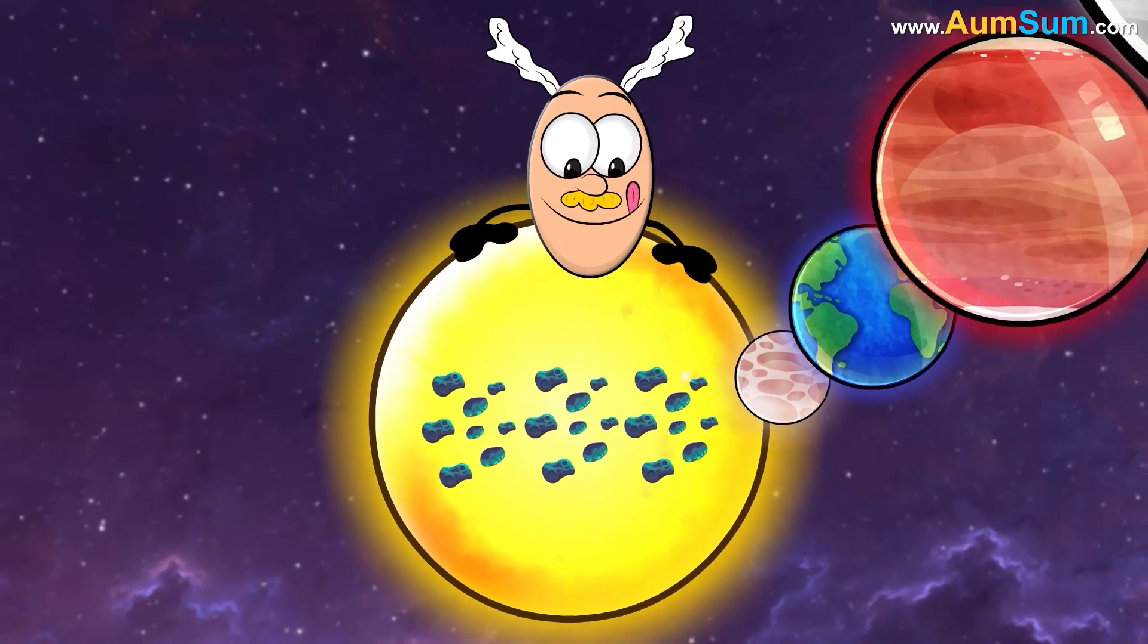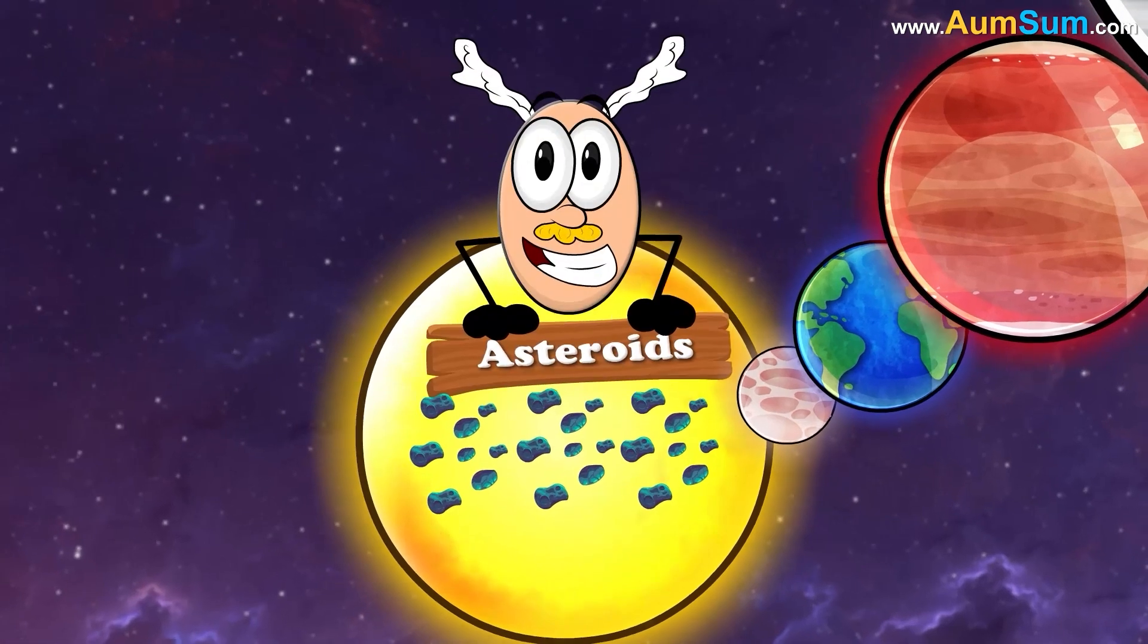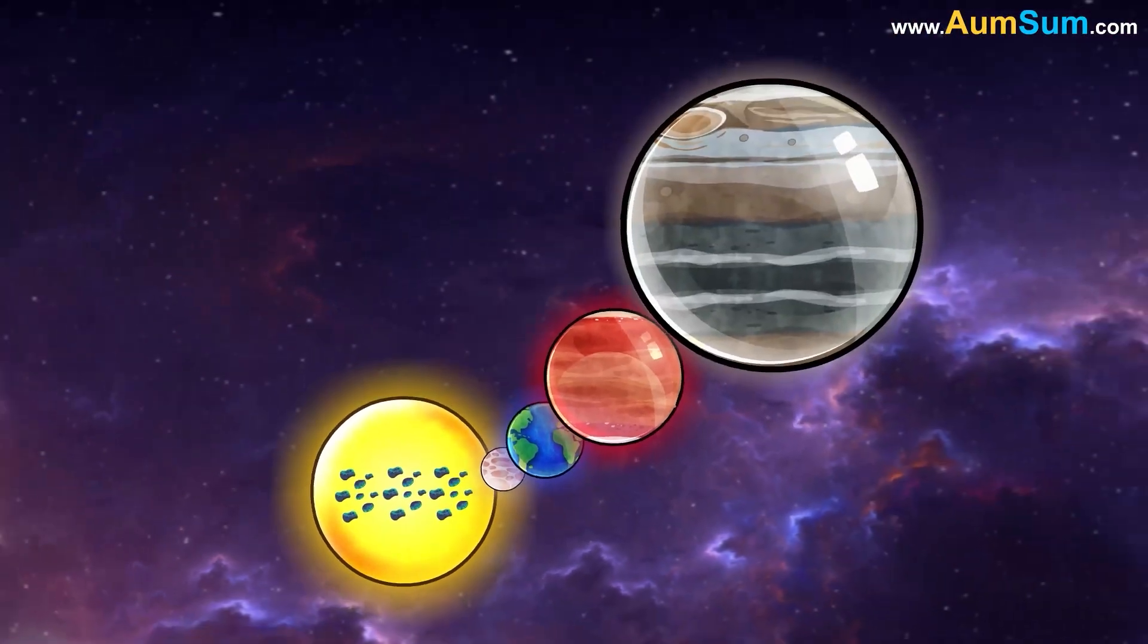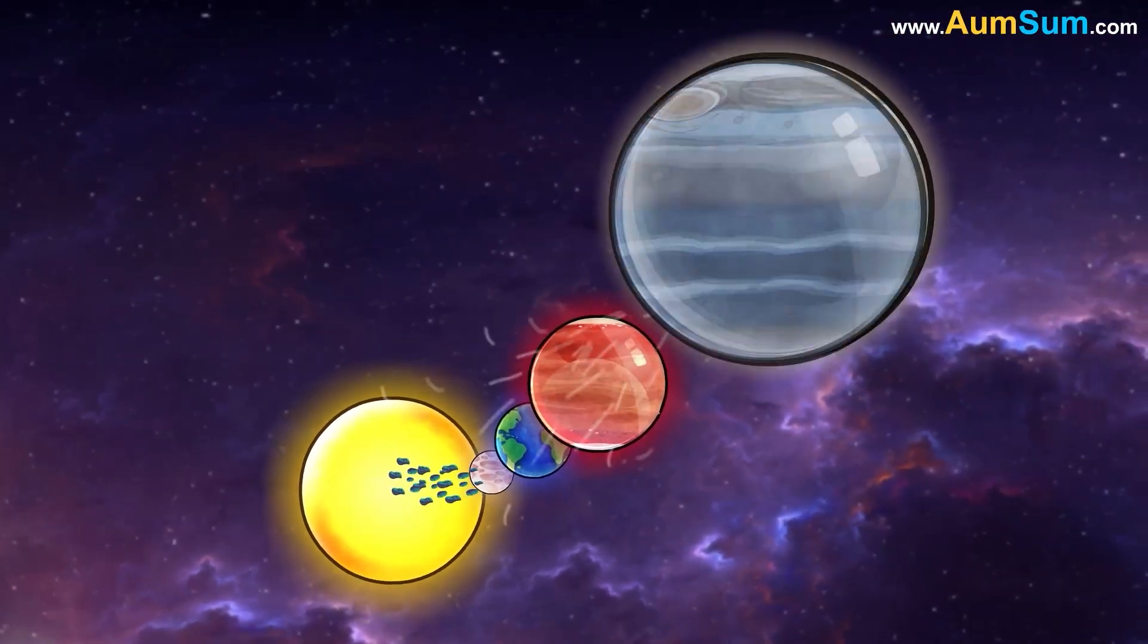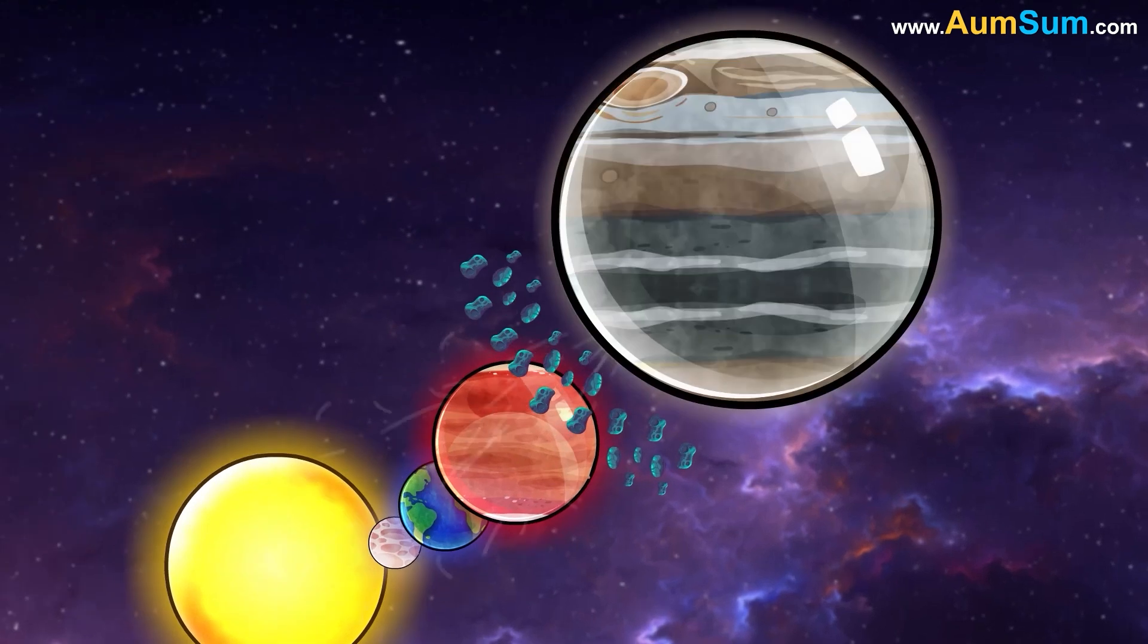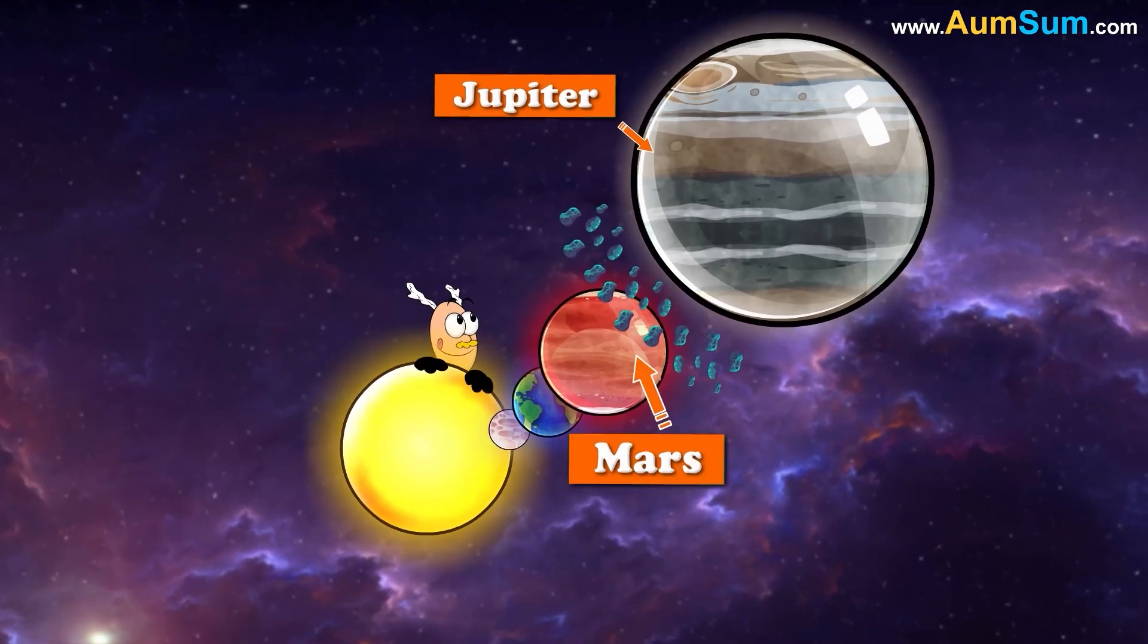Most of these asteroids got pulled by Jupiter's huge gravitational pull and eventually formed an asteroid belt between Jupiter and Mars.